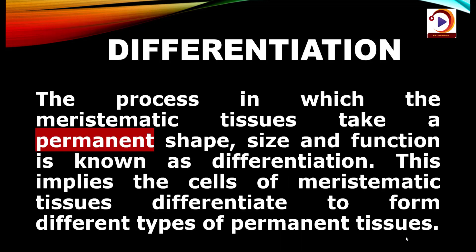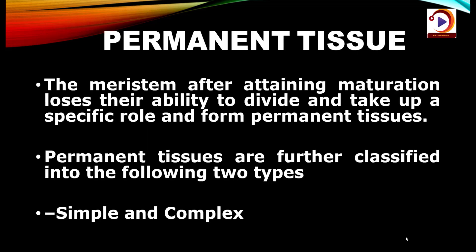Now we have an important term to discuss: differentiation. The process in which the meristematic tissue takes a permanent shape, size and function is known as differentiation. This implies that cells of meristematic nature differentiate to form different types of permanent tissue. The meristem, after attaining maturation, loses its ability to divide and takes up a specific role to form permanent tissue.